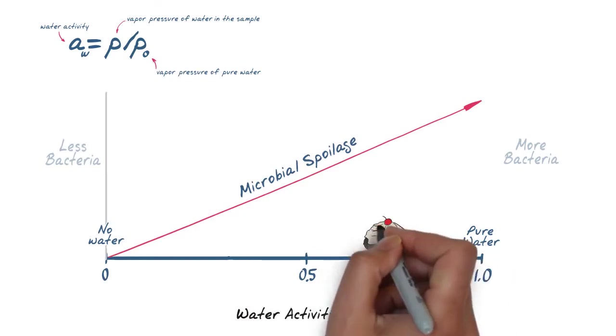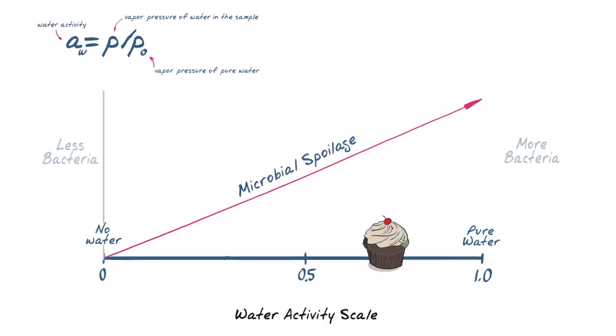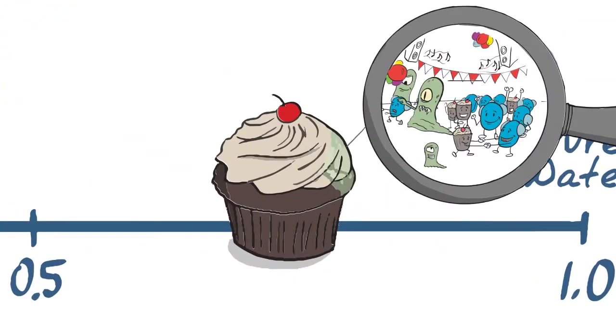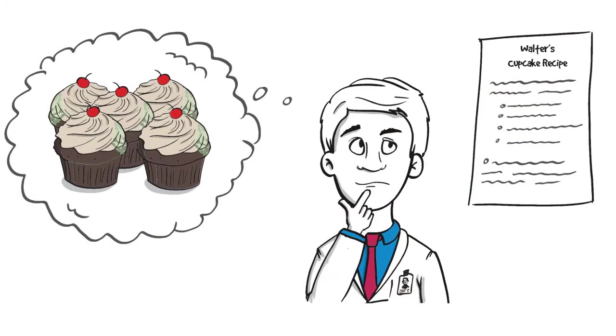In relation to cupcakes, a water activity measurement of 0.5 or lower would mean the likelihood of microbial growth is very low. In Walter's cupcakes, which measured at 0.9, many water molecules are unbound, facilitating mold growth.